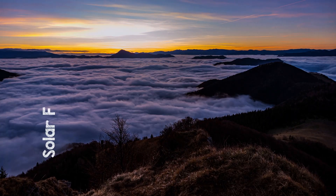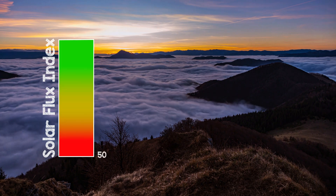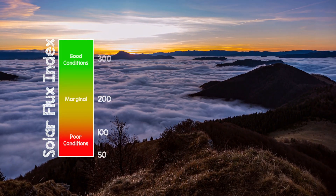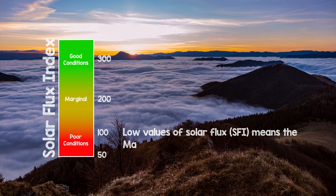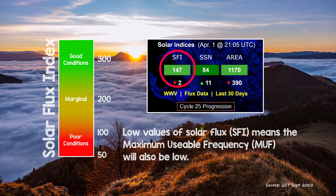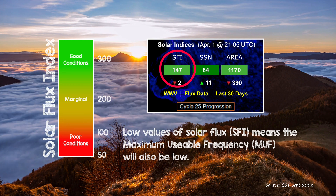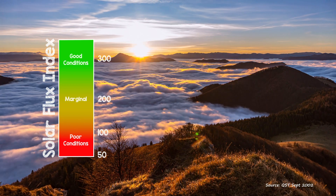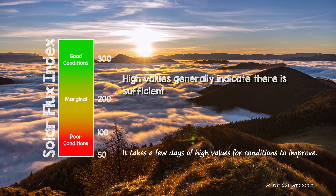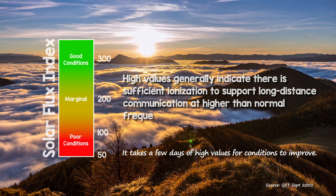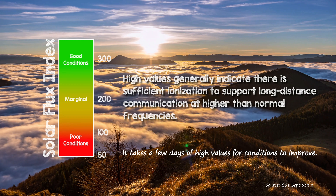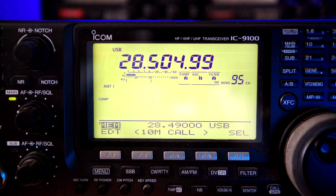The figure for solar flux can vary from as low as 50 to as high as 300. Low values indicate that the maximum usable frequency will be low and overall HF conditions will not be very good. Conversely, high values generally indicate there is sufficient ionization to support long-distance communication at higher than normal frequencies.